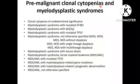Pre-malignant clonal cytopenias and myelodysplastic syndromes is a category under the International Consensus Classification 2022, which includes: clonal cytopenia of undetermined significance; MDS with mutated SF3B1; MDS with deletion 5q; MDS with mutated TP53; MDS-NOS with three subcategories — without dysplasia, single-lineage dysplasia, and multilineage dysplasia; MDS with excess blasts in pediatric patients; MDS-AML; MDS-AML with mutated TP53; MDS-AML with myelodysplasia-related gene mutations; MDS-AML with myelodysplasia-related cytogenetic abnormalities; and MDS-AML NOS.